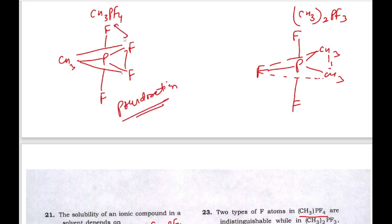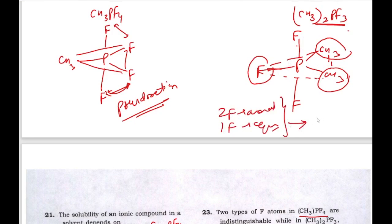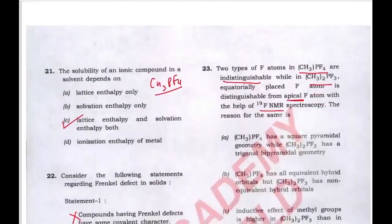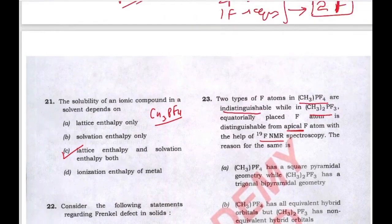In pseudo-rotation, atoms can readily exchange their sites. However, in (CH3)2PF3, it is difficult for the fluorine atoms to become indistinguishable because both methyl groups generate rigidity in the structure, inhibiting pseudo-rotation. Therefore, there are two types of fluorine atoms — two axial and one equatorial — which can be easily distinguished by ¹⁹F NMR spectroscopy. The correct answer is D.